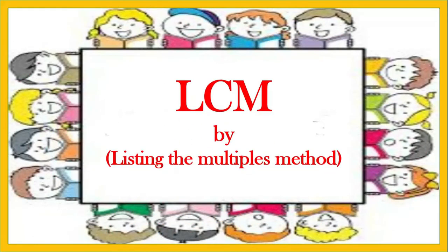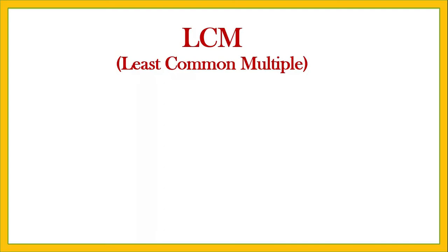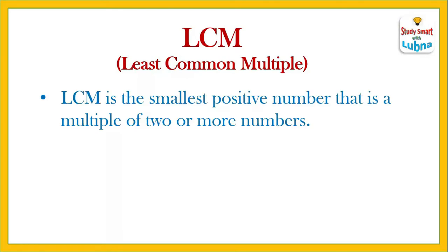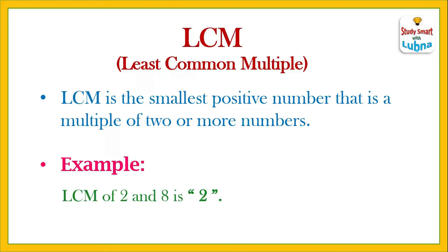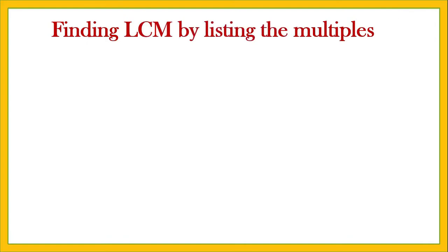Welcome students. Today we are going to learn about how to find LCM by listing the multiples method. LCM stands for Least Common Multiple. LCM is the smallest positive number that is a multiple of two or more numbers. For example, the LCM of 2 and 8 is 2. Now let's see how we'll find LCM by listing the multiples method.